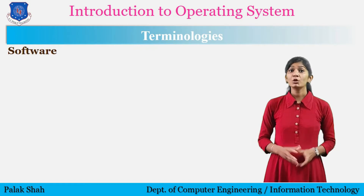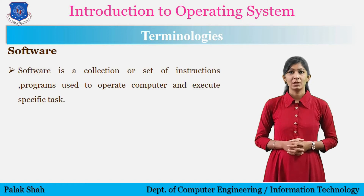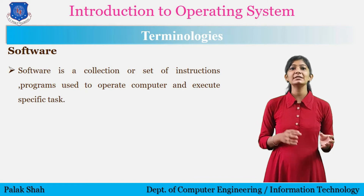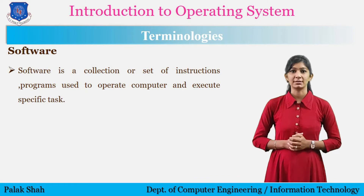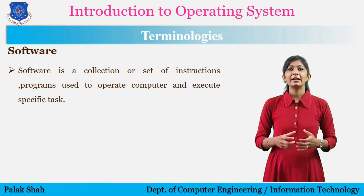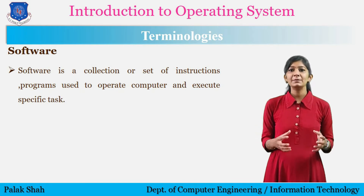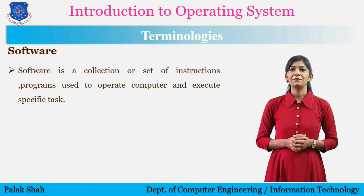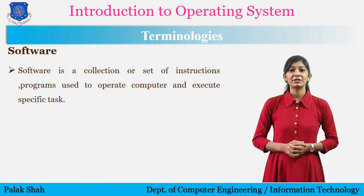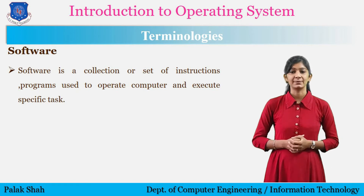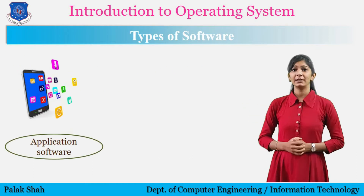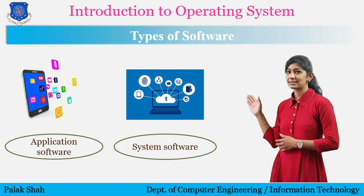The first terminology is software. What is software? Software is a set of instructions and programs used to operate computers and execute specific tasks. Without software, most computers would be useless. Software can be thought of as the variable part of the computer. Software is a general term used to refer to the applications, scripts, and programs that run on a device. Software is divided into two categories: the first one is application software and the second one is system software.